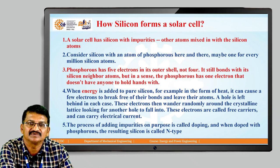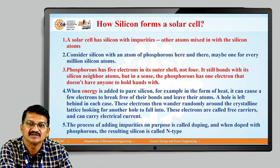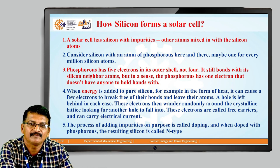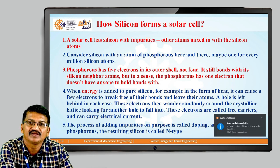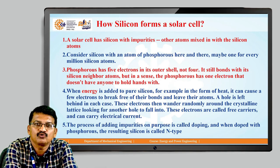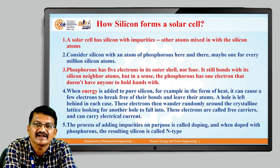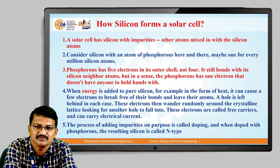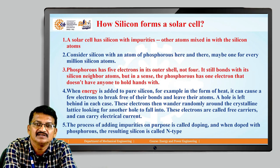Other atoms are mixed in with the silicon atoms. Consider silicon with atoms of phosphorus — there may be one for every million silicon atoms. Phosphorus has 5 electrons in its outer shell, not 4. It still bonds with its silicon neighbor atoms, but in a sense, the phosphorus has one electron that does not have anyone to hold hands with. When energy is added to pure silicon, for example in the form of heat, it can cause a few electrons to break free of their bonds and leave their atoms, and a hole is left behind in each case. These electrons wander randomly around the crystalline lattice looking for another hole to fall into. These electrons are called free carriers and can carry electrical current. The process of adding impurities is called doping, and when doped with phosphorus, the resulting silicon is called n-type.